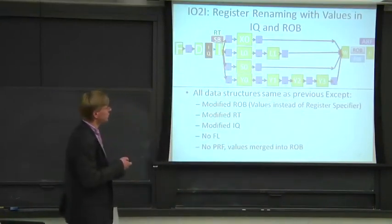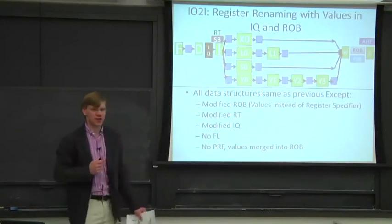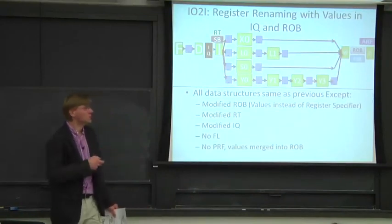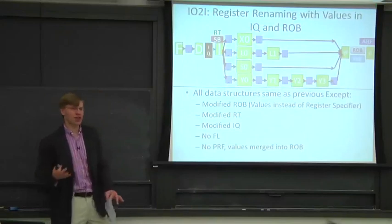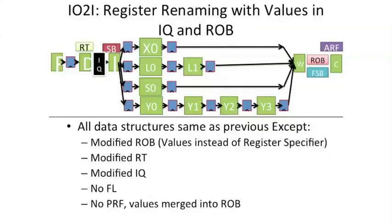A couple things change when you do this. One structure is missing: there is no physical register file — we removed that. We're going to store in-flight instructions in a merged reorder buffer physical register file effectively. Second, we no longer have a free list. Instead, we're basically going to use different reorder buffer entries to keep track of our free list.